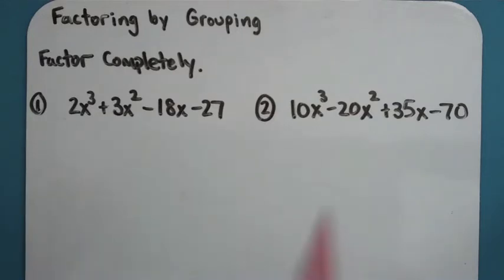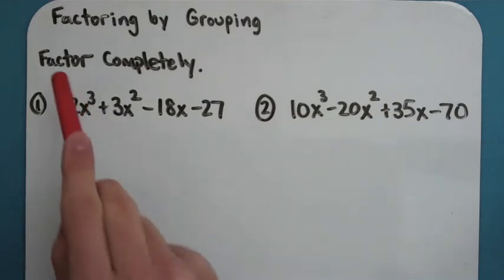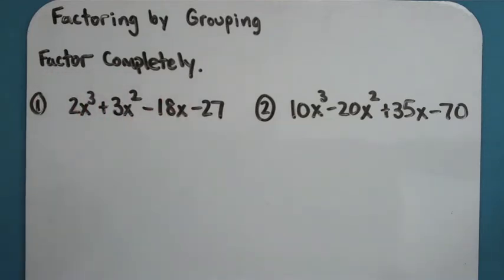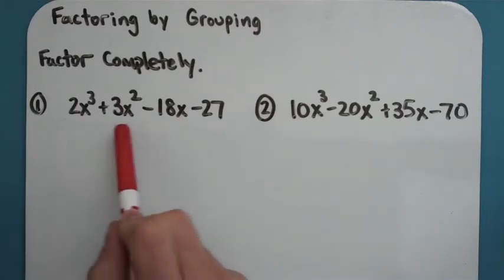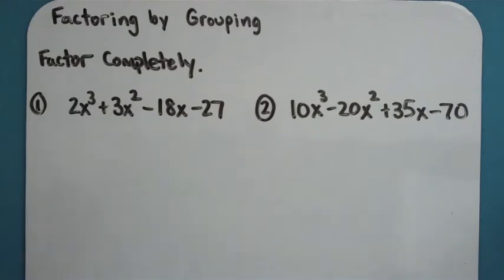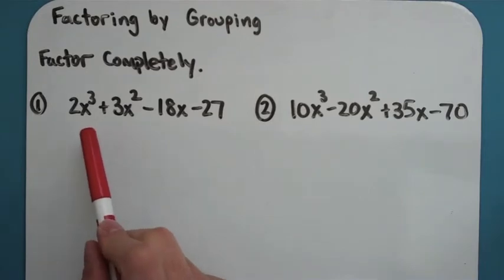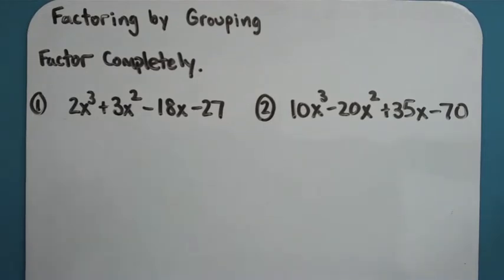We're going to do two problems of this type of factoring called factoring by grouping. The instructions will ask you to factor completely, nothing new there. Hopefully by this point in the year you've been trained that whenever you're asked to factor you always look for the GCF first. We're going to look and see if there's anything that goes into each term in my problem. When we've dealt with problems like this in the past there's always been a variable we can take out.